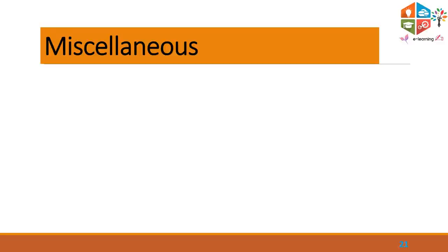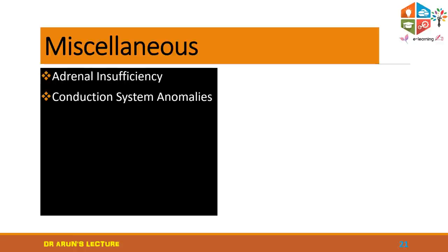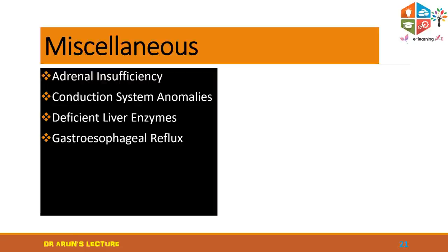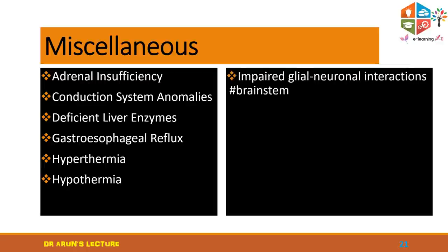Miscellaneous theories include adrenal insufficiency, conduction system anomalies, liver enzyme dysfunction, gastroesophageal reflux, hypothermia, hyperthermia, impaired glial-neural interactions in cardiac and respiratory centers, metabolic disorders, neurogenic shock, sodium overload in feeds, and suffocation by bed clothings or pillow — all of which can lead to SIDS.